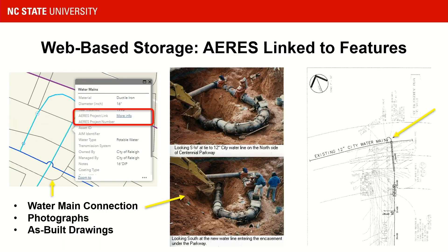I've talked about ARIES, our web-based record storage system. During COVID when I was working from home, I saw the opportunity to link hundreds if not thousands of projects to our feature classes. Here's an example of a waterline connection — from that link you can pull up photographs of that connection and also drawings of that utility. Now people with access to our utilities viewer can find this information readily, saving time not just for myself but for anyone within our facilities group or outside contractors with access to this web application.